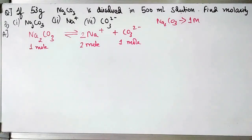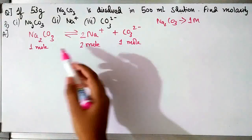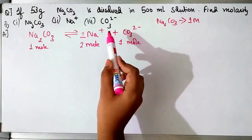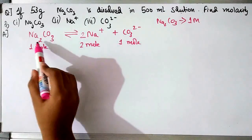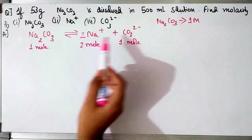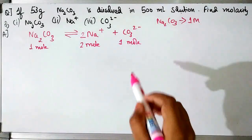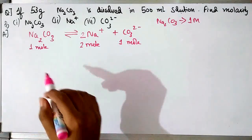Let's see how to find the molarity of the respective ions. If you dissolve Na₂CO₃ in water, it gives rise to 2 Na⁺ ions and 1 CO₃²⁻ ion, because Na₂ gives 2 Na⁺ ions and CO₃ gives 1 CO₃²⁻ ion.